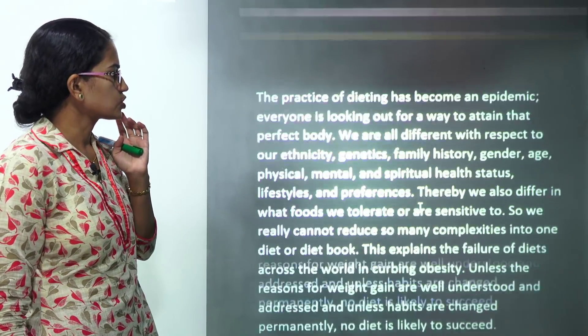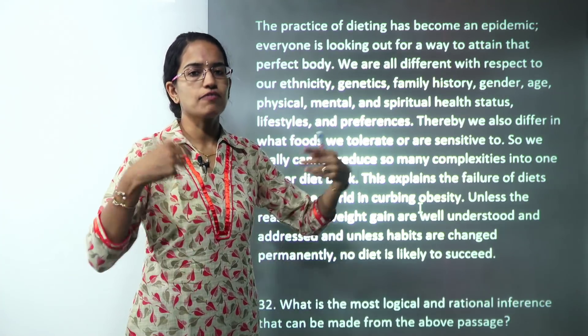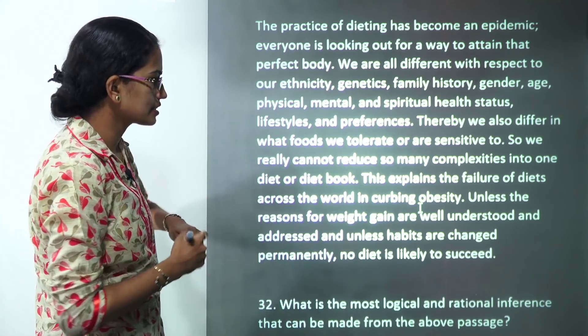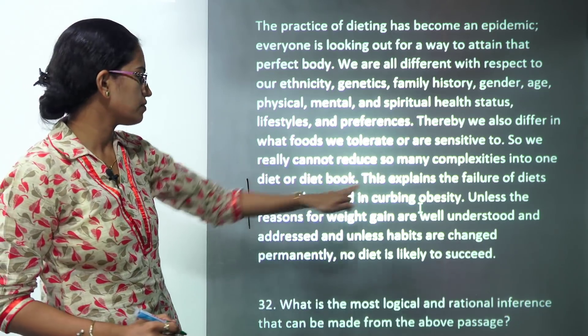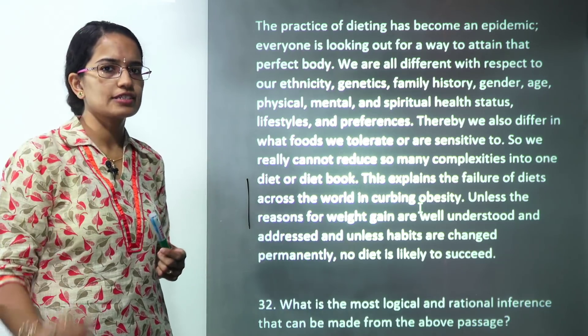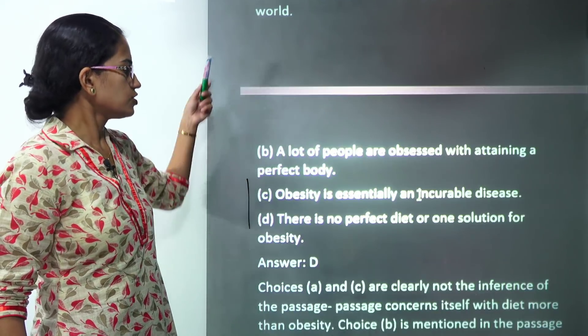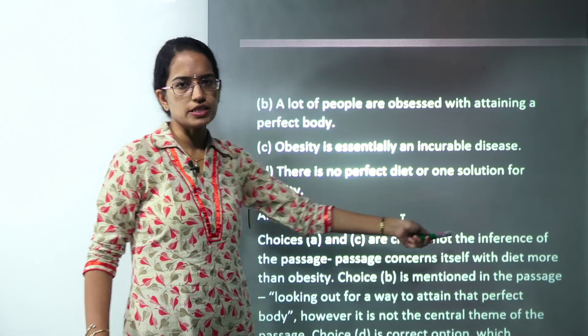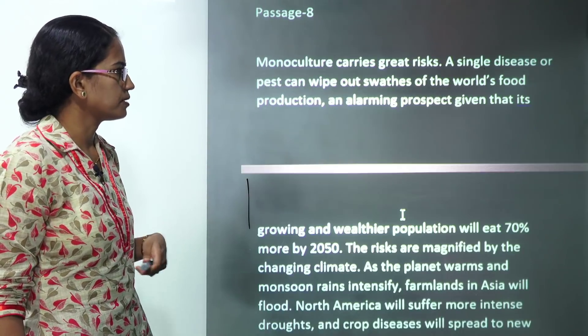The next passage talks about dieting. Dieting has become a trend, a kind of epidemic that has been spreading. The idea here is explained from the sentence itself. It explained the failure of the diets across the world in curbing obesity. That means there is no one standard solution to curb obesity. Everyone is trying for a different solution. So the most rational solution here could be there is no one perfect diet plan or one solution for obesity. And that's what is the summary of the passage or the key point from the passage.